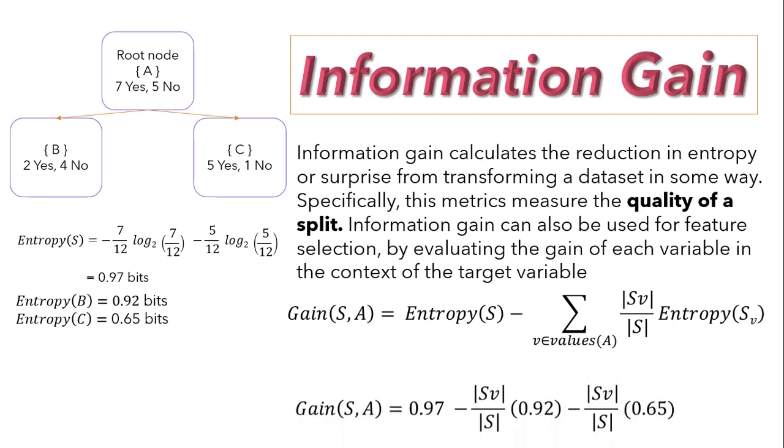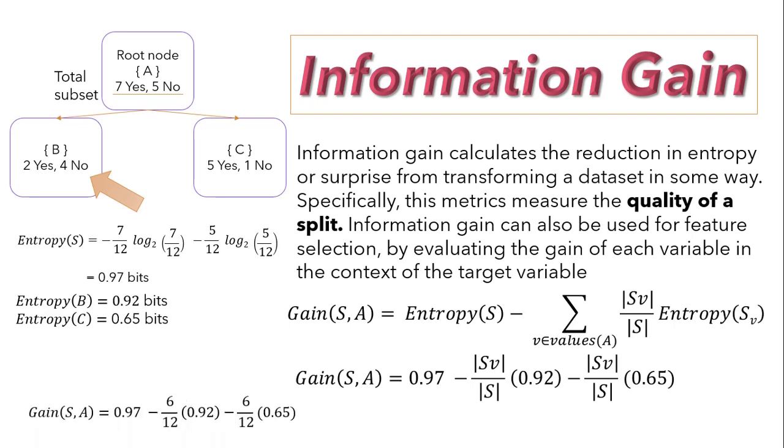Here entropy of node B and node C will be considered as entropy of S_v. Now let's substitute these values to the equation as shown on the screen. Here we have to substitute S_v over S. Let's understand what is this. If I talk about node B, then S_v will be total number of components, that is 2 plus 4 equals 6, and S is total subset, that is 5 plus 7 equals 12. We can substitute S_v over S for node B as 6 over 12, and for node C, S_v over S will be again 6 over 12. Let's calculate: 0.97 minus 6 over 12 into 0.92 minus 6 over 12 into 0.65, and find out the information gain as 0.185.